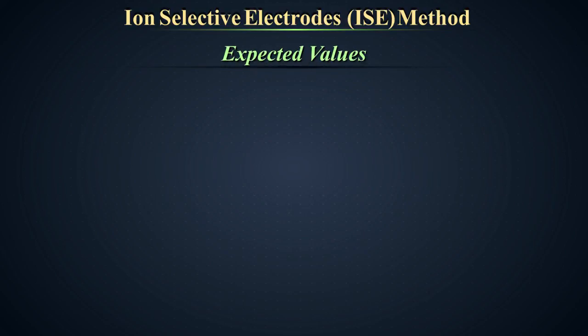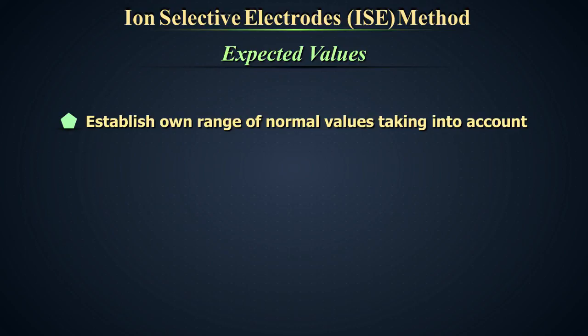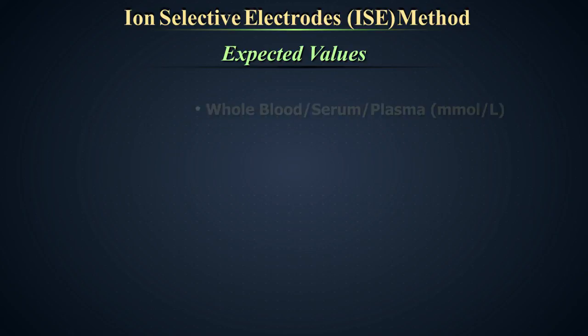Expected values. The values shown here are intended to be used only as a guide. Each laboratory should establish their own range of normal values, taking into account factors such as age, sex, diet and other determinants of electrolyte levels. Whole blood, serum, plasma.